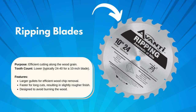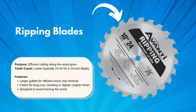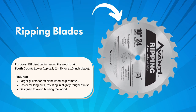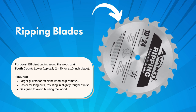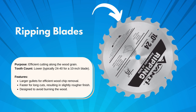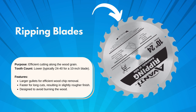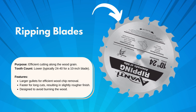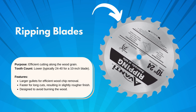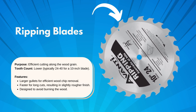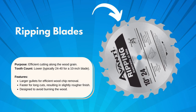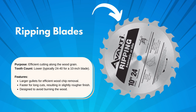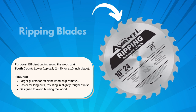Now, switch gears to the ripping blade. Check out those broader teeth, spaced out a bit more. This blade's made for cutting along the wood's grain. It's like the difference between a sprinter and a marathon runner — it's built for longer, straighter cuts, tearing through the wood efficiently.